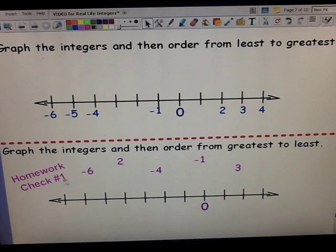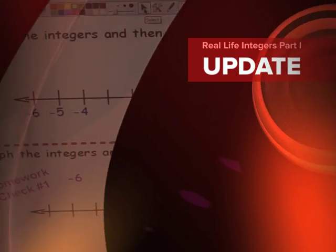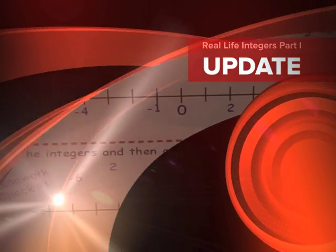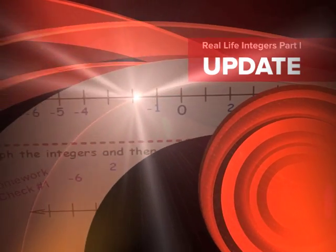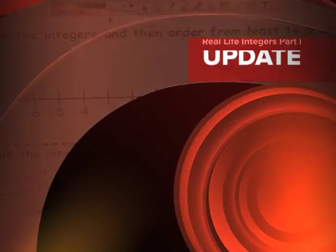Go ahead, and this is homework check question number 1. You'll want to pause the video. You're going to draw the number line and put the integers on the number line. Order them on the number line. And then you're going to list them from greatest to least, from the greatest number to the least number. You'll do this on your own sheet of paper that you're going to turn into class. When you're done, come back and complete the video.